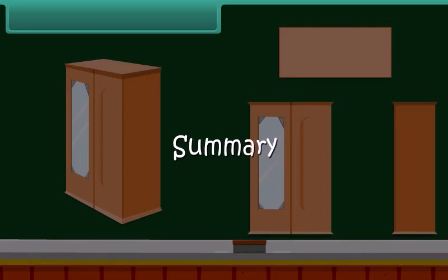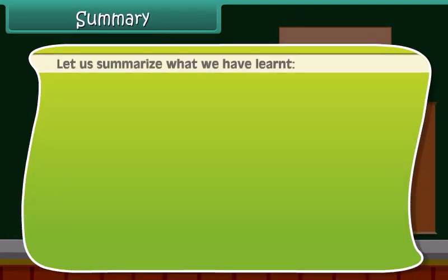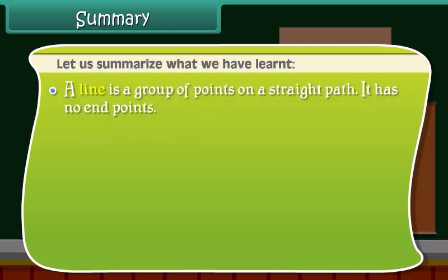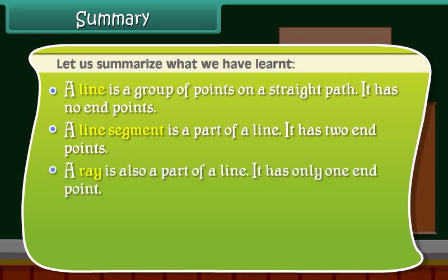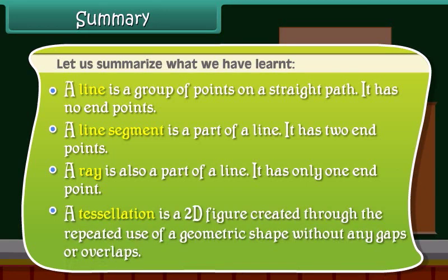Let us summarize what we have learned. A line is a group of points on a straight path — it has no end points. A line segment is a part of a line with two end points. A ray is also a part of a line with only one end point. A tessellation is a 2D figure created through the repeated use of a geometric shape without any gaps or overlaps.